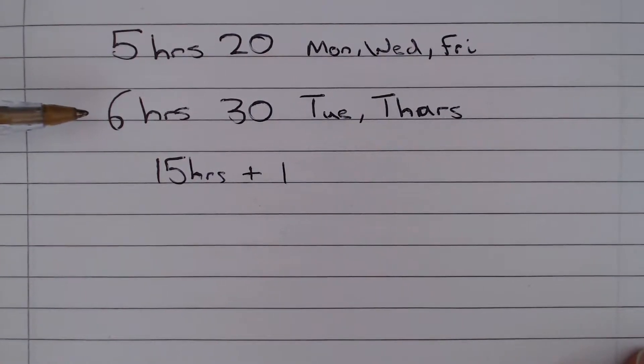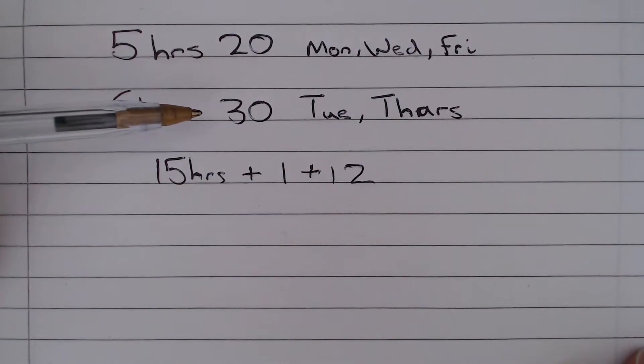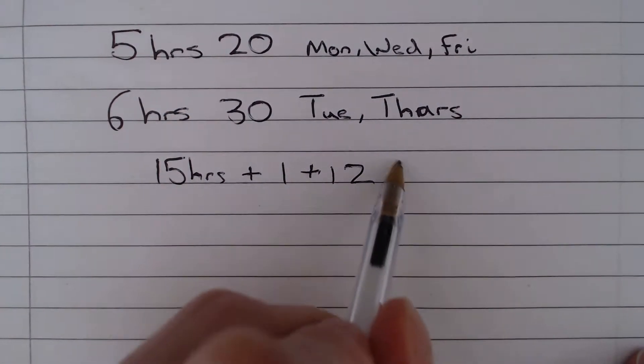Now 6 hours times 2 gives us 12 hours. And 30 minutes times 2 gives us another hour.